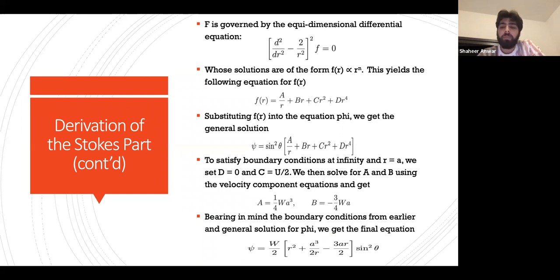Bearing in mind the boundary conditions from earlier and the general solution for φ, we get the final equation: φ = (w/2) * (r² + a³/(2r) - 3a⁴/2) * sin²θ.